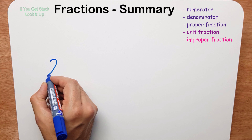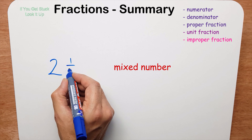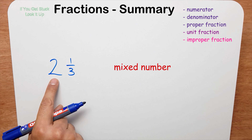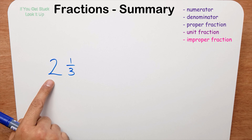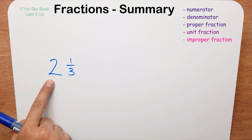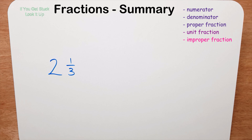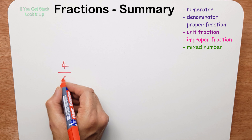Here we have a mixed number: two and one-third. With a mixed number you have a whole part and a fraction part. So now I have this fraction four-sixths and I want to simplify it.